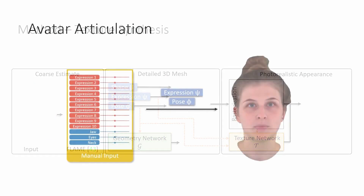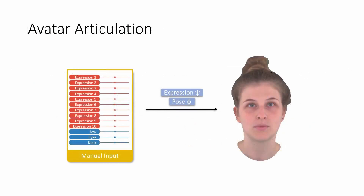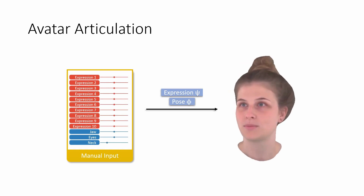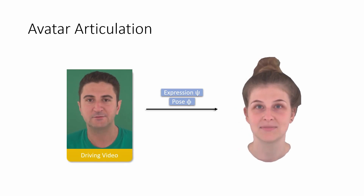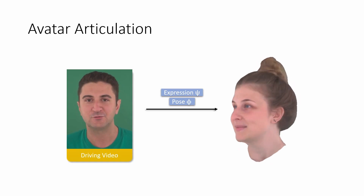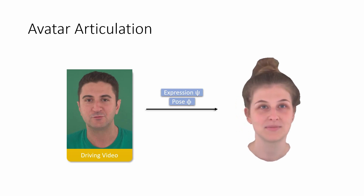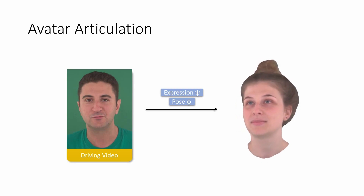The resulting avatar is controlled via pose and expression parameters psi and phi of the morphable head mesh. These can be tuned manually for expressions and jaw movements, eye poses, and neck rotations. A driving sequence may also be used to extract the controlling parameters. The animation is consistent even from novel viewing directions, from the side or other camera trajectories around the head.